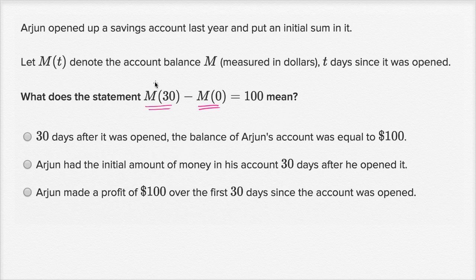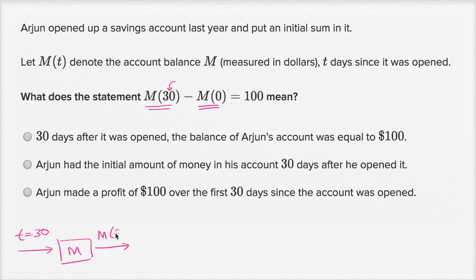So before I even look at the choices, let's think about it. This means when you input t equals 30 into your function, you're going to get M(30). So if you say t equals 30, you input that into your function M, you are going to get M(30). This is the account balance 30 days since it was opened. This is the account balance after 30 days.